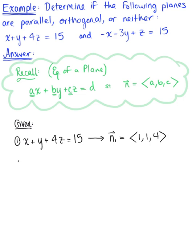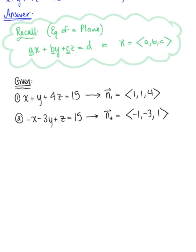And now we are also given the plane minus x minus 3y plus z equals 15. And looking at each variable's coefficients, we see that this plane has a normal vector defined by the components negative 1, negative 3, 1. So now we need to determine, are these planes parallel, are they orthogonal, or are they neither?